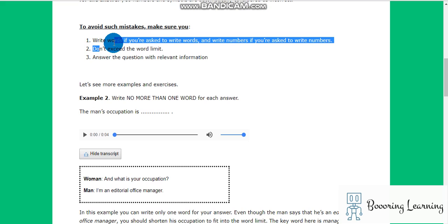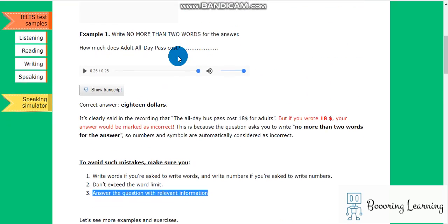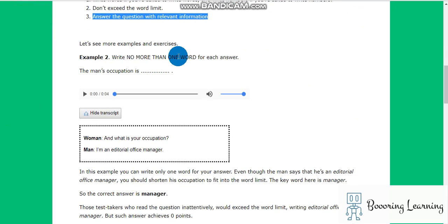To avoid such mistakes, make sure you write words if you're asked to write words, and write numbers if you're asked to write numbers. Don't exceed the word limit. Answer the question with relevant information. And before you start to listen to the audio, just read how many words you should write. At first listening is kind of challenging because it's 30 minutes, but if you practice you will see that it is super easy.